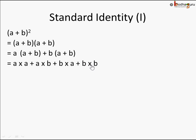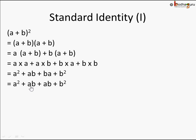Opening the brackets using the distributive law, we get: a² + ab + ba + b². Since ab = ba, we can rewrite this as a² + ab + ab + b², and ab + ab = 2ab. So (a + b)² = a² + 2ab + b². This is the rule for Standard Identity 1.